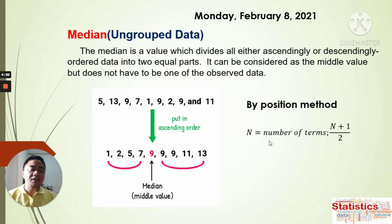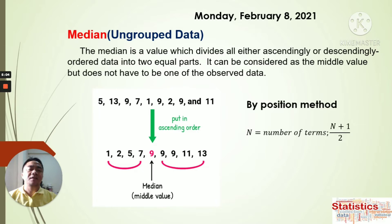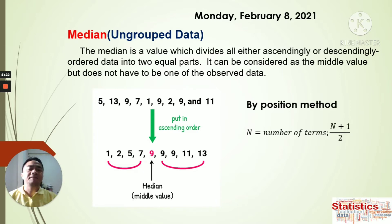We need to know how many data were collected — that is the value of n. The formula is (n + 1) ÷ 2. For example, if there are 10 data points: 10 + 1 = 11, divided by 2 = 5.5, meaning the median is between the 5th and 6th positions. If n is odd, like 9: 9 + 1 = 10, divided by 2 = 5, so the 5th position of the arranged data is the median.